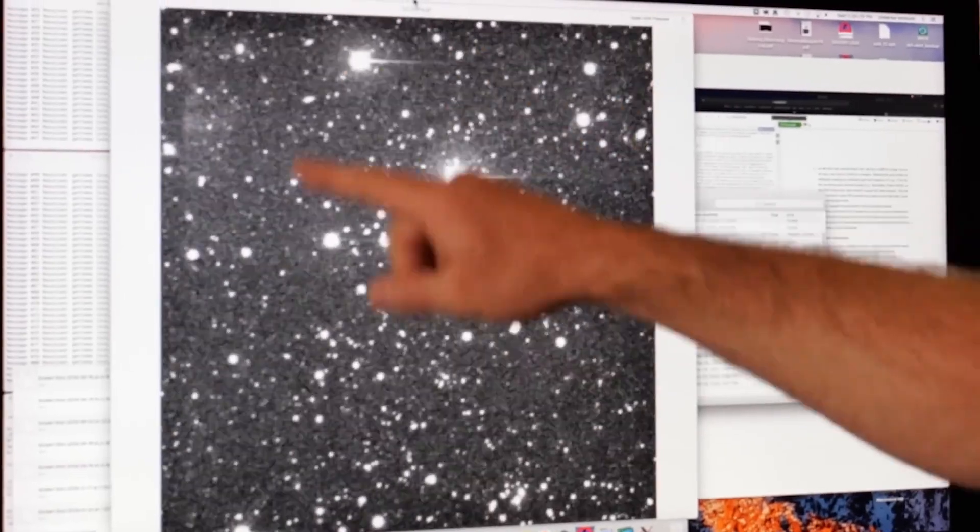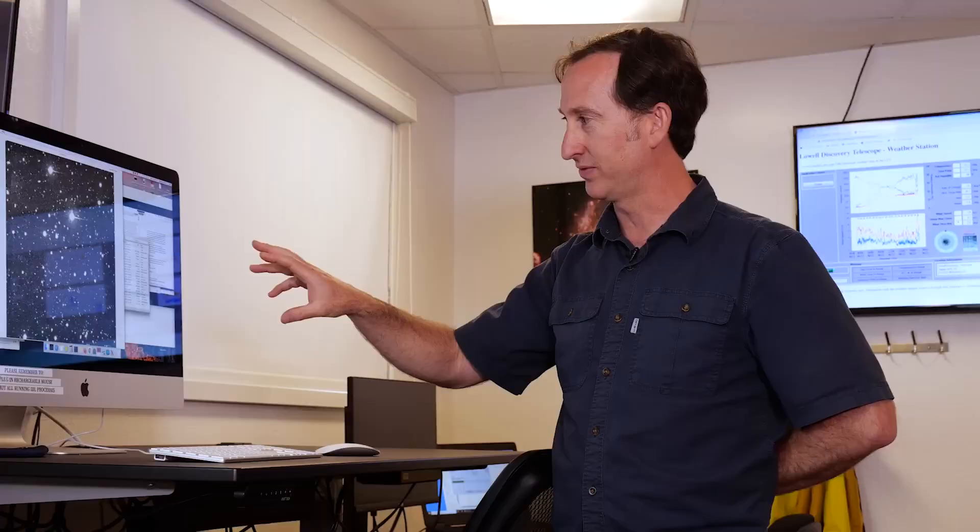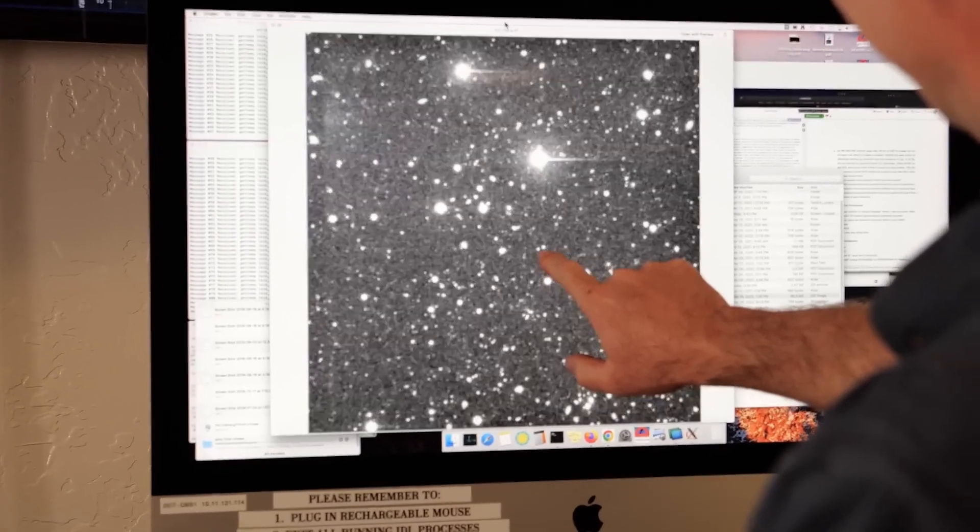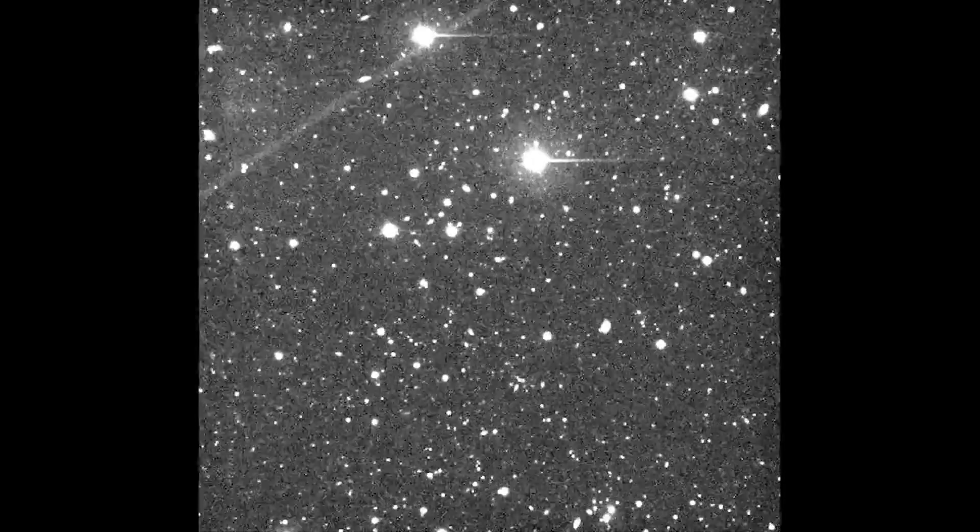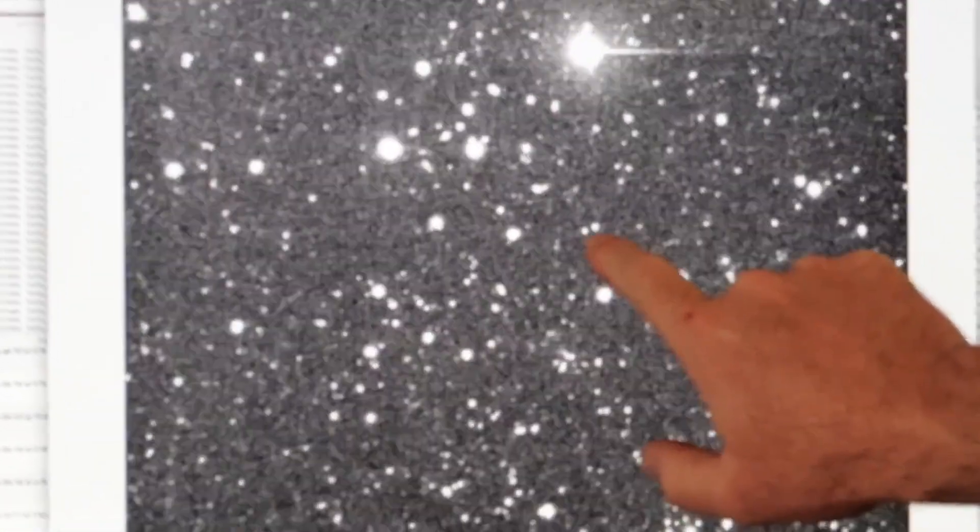And so you have essentially a fixed star field here. All the white dots are stars of different brightness. And moving through this field is Didymos and Dimorphos, which again, we can't distinguish them as discrete points of light, but we have that small object moving through the field of view.